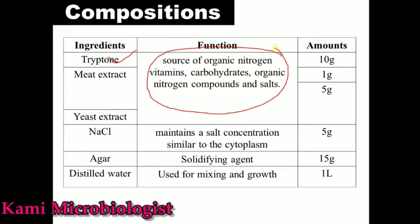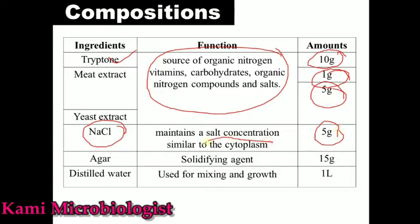For one liter: tryptone is required at 10 grams, meat extract at 1 gram, and yeast extract at 5 grams. NaCl (sodium chloride) is required at 5 grams per liter, which is specially used to maintain salt concentration similar to that of the cytoplasm. Agar, acting as the solidifying agent, requires 15 grams per liter.